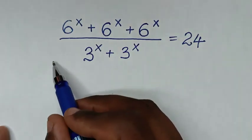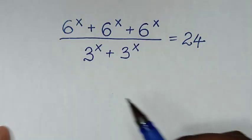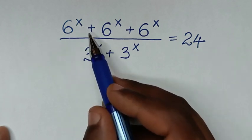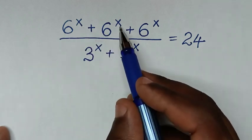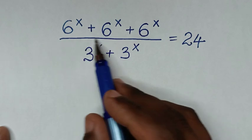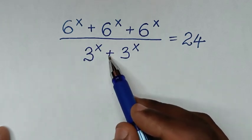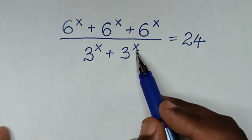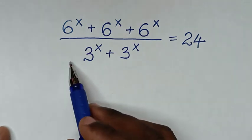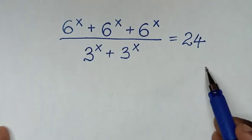Hello, you are welcome to solve this math problem which is 6 power x plus 6 power x plus 6 power x over 3 power x plus 3 power x is equal to 24, to find the value of x from this equation.